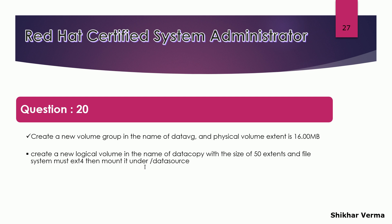The second requirement is we have to create a logical volume in that volume group. The name of the logical volume would be data copy and the size is 50 extents. One extent size is 16 MB, so 50 extents equals 800 MB. It must be formatted with ext4 and mounted under /data/source.